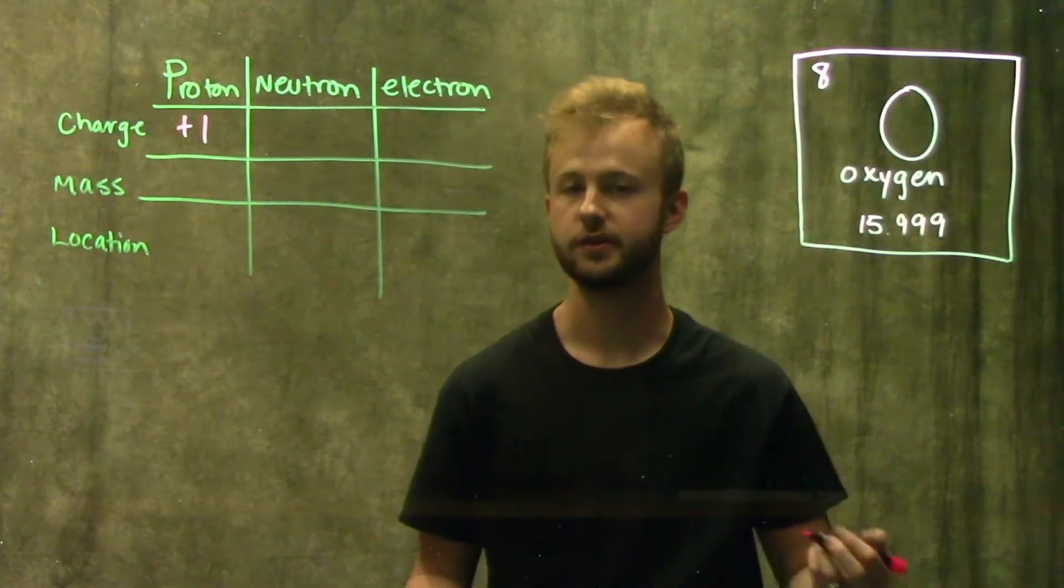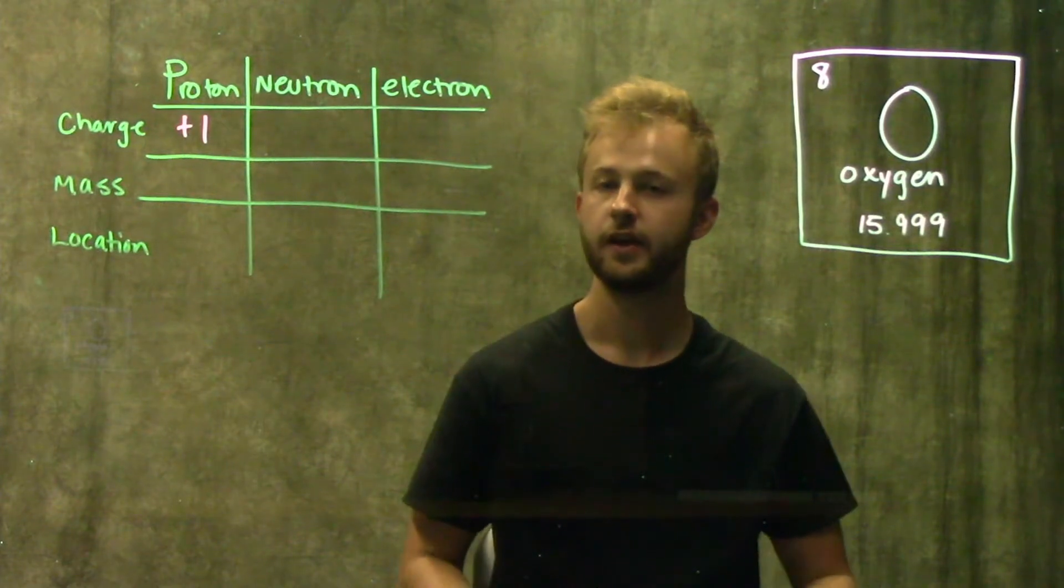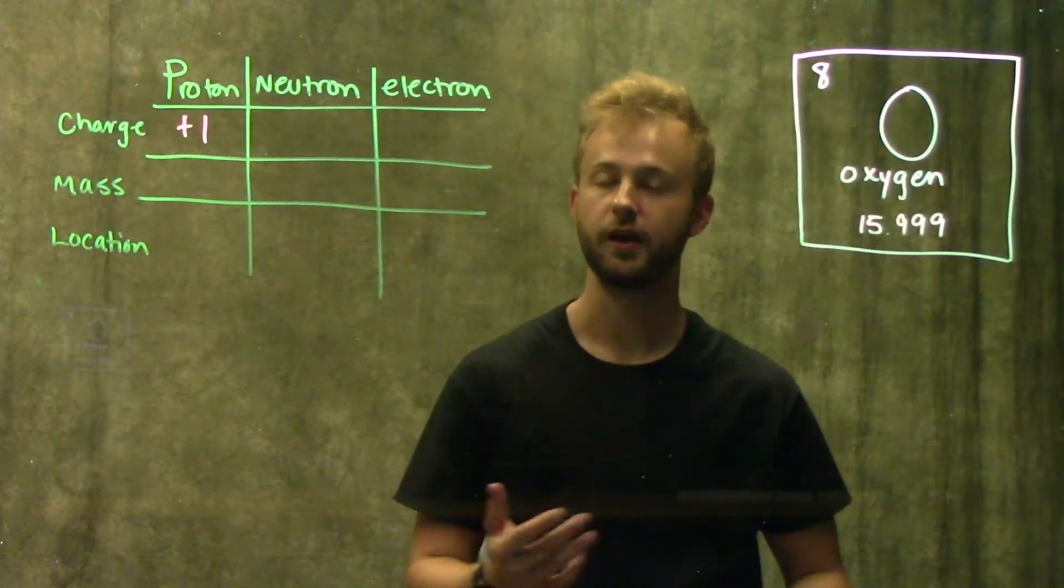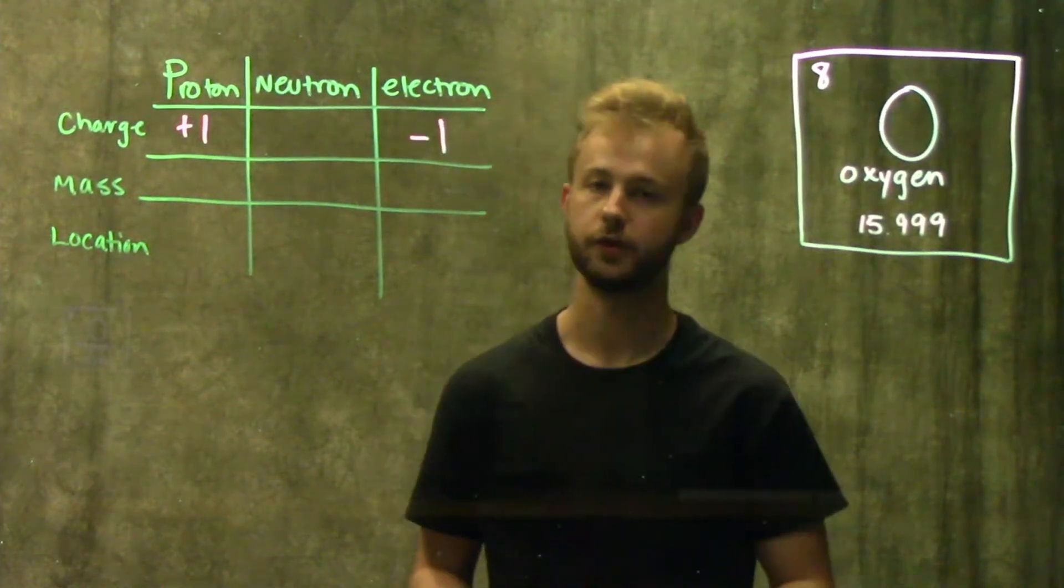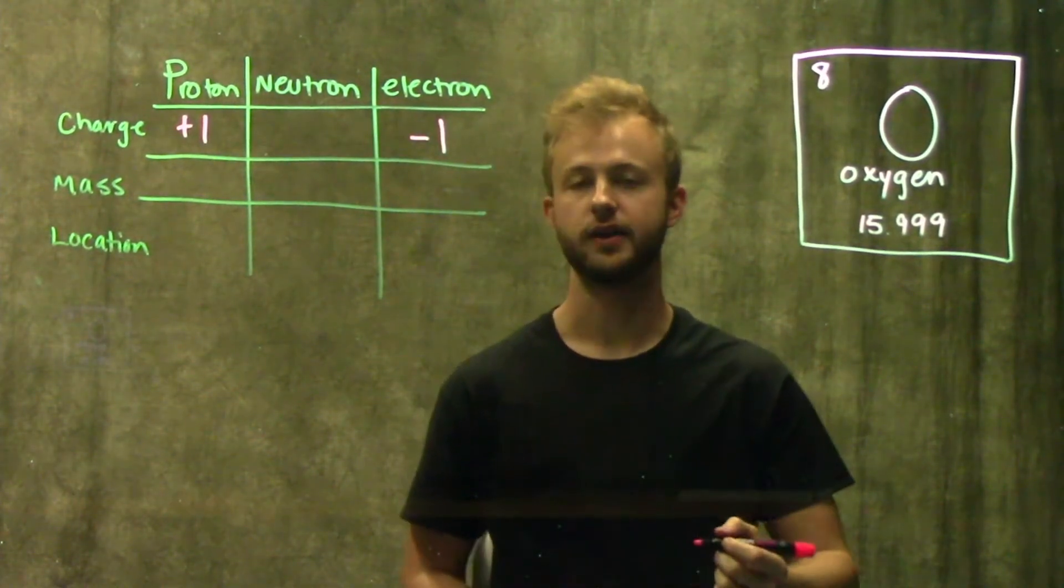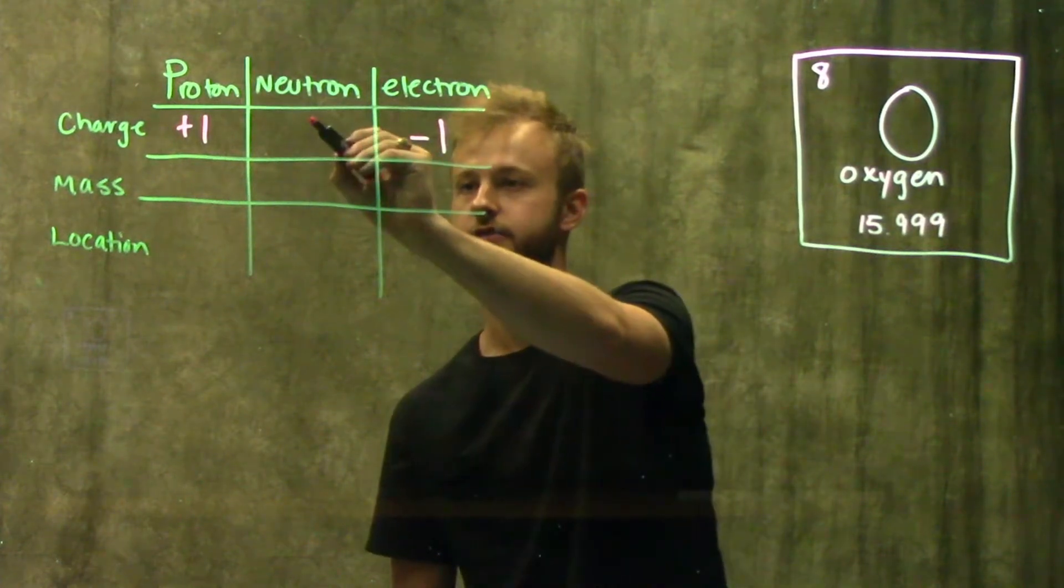And those negative charges are going to be supplied by our electrons. So those are going to have a charge of negative one. And the neutron, kind of like the name implies, is going to have a neutral charge of zero.